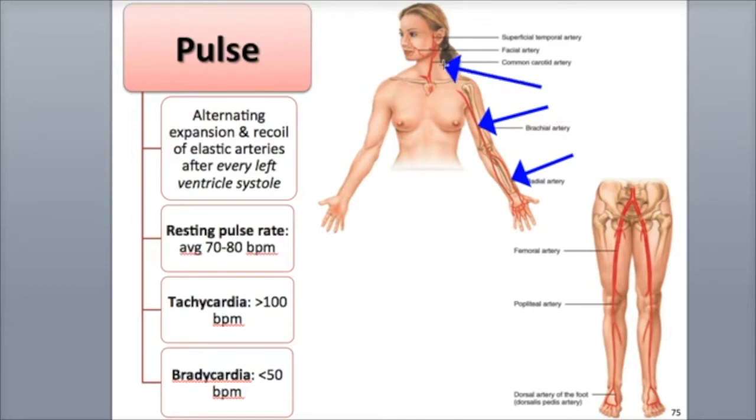Additional pulse points include the common carotid artery of the neck, the facial artery of the mandible, and the superficial temporal artery near the ear.